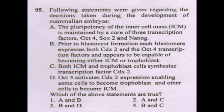Next question on mammalian embryo development: two processes take place. First, pluripotency of the inner cell mass (ICM) is maintained by a core of three transcription factors — Oct4, Sox2, and Nanog. Second, prior to blastocyst formation, each blastomere expresses both Cdx2 and Oct4 transcription factors and appears capable of becoming either ICM or trophoblast. Option 1 is correct here.